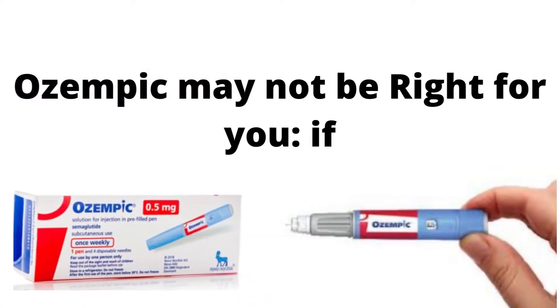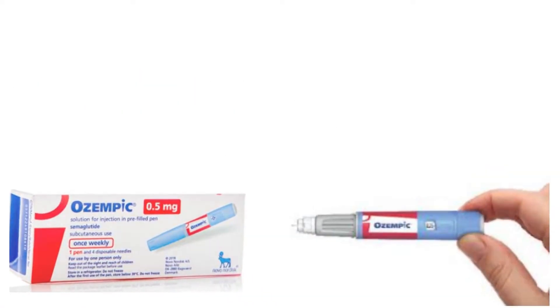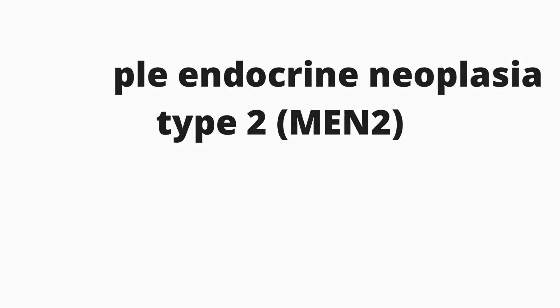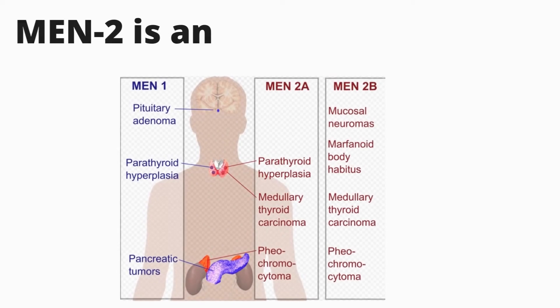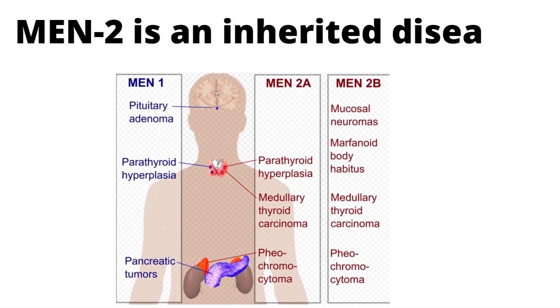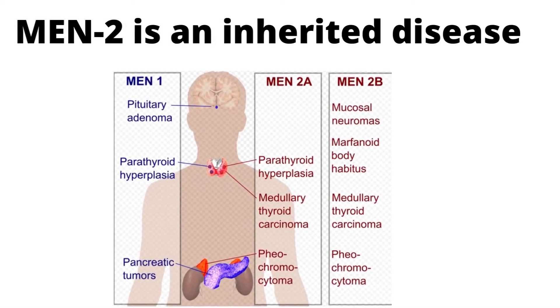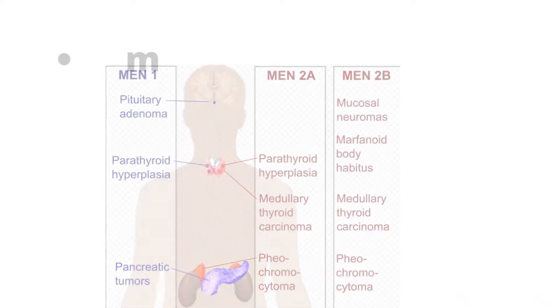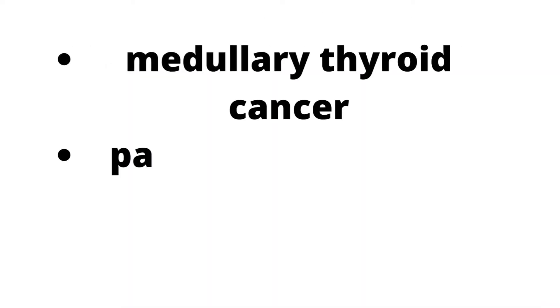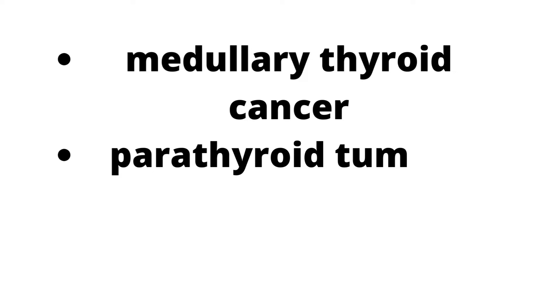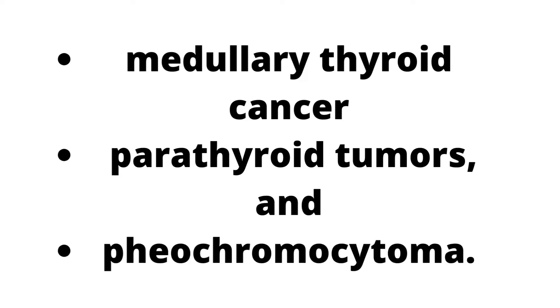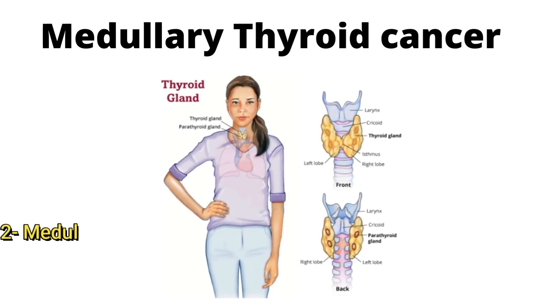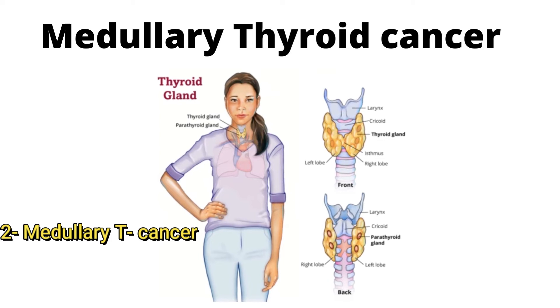Ozempic may not be right for you if you have a rare genetic condition called multiple endocrine neoplasia type 2. Multiple endocrine neoplasia type 2 is an inherited disease associated with three primary tumor types: medullary thyroid cancer, parathyroid tumors, and pheochromocytoma. You or a member of your family has had medullary thyroid cancer.